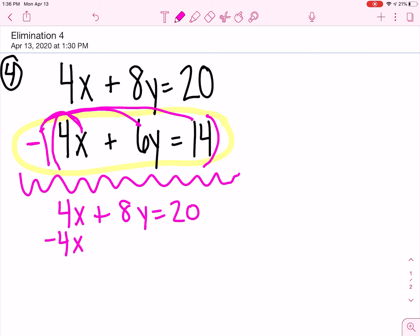So, negative 1 times 4x will be minus 4x. Ding, ding, ding. There's my opposite. But I've got to keep going. Negative 1 times 6y is going to be minus 6y equals negative 1 times 14 is going to be negative 14. This just makes all the signs change. So, it goes from a positive to a negative. Positive to a negative. Positive to a negative.